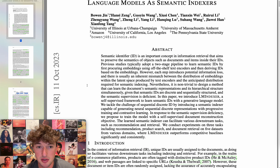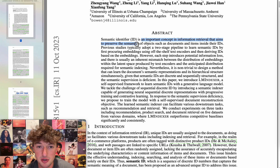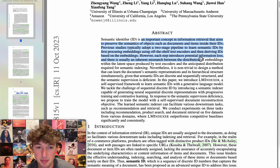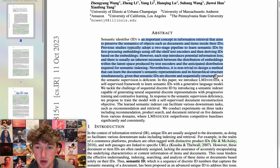Language Models as Semantic Indexers. Semantic identifier is an important concept in information retrieval that aims to preserve the semantics of objects such as documents inside their IDs. Previous studies adopted a two-stage pipeline to learn semantic IDs by first procuring embeddings using off-the-shelf text encoders, then deriving IDs based on the embeddings. However, each step introduces potential information loss and there's an inherent mismatch between the distribution of embeddings in latent space and the distribution required for semantic indexing. This paper introduces LM-Indexer, a self-supervised framework to learn semantic IDs with a generative language model. I don't care.